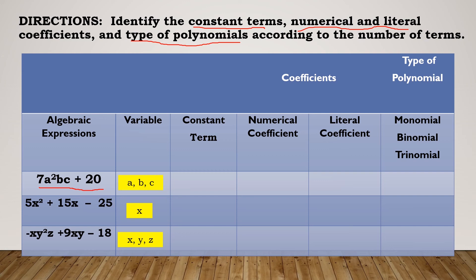For the constant term — that is the number without a variable — in the first polynomial it is 20. In the second polynomial it is -25 (note the negative sign). And the last one is -18.